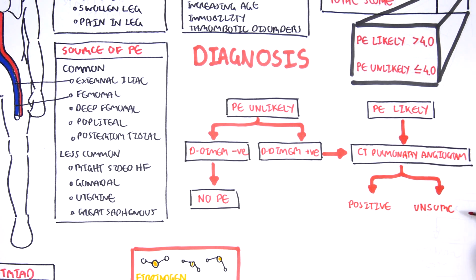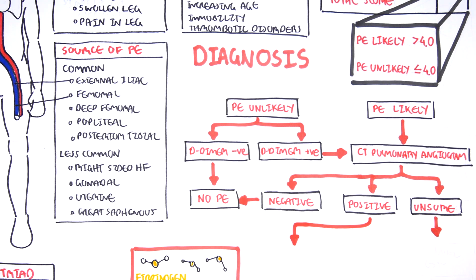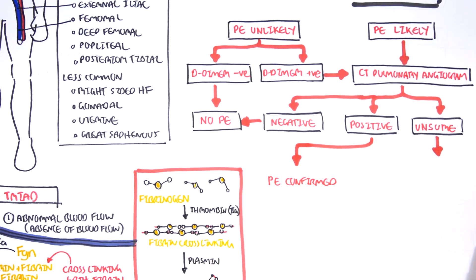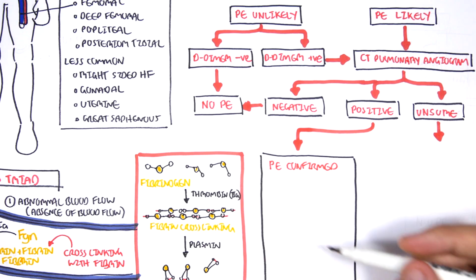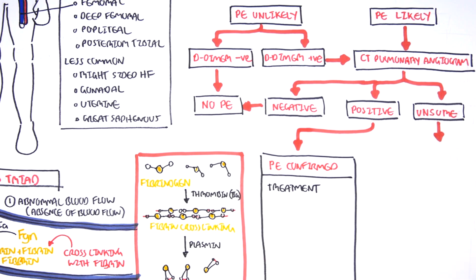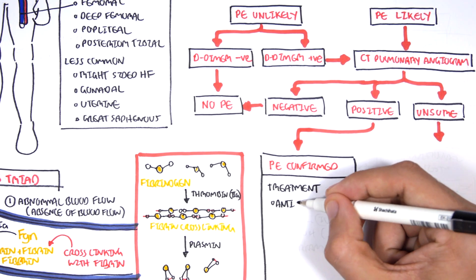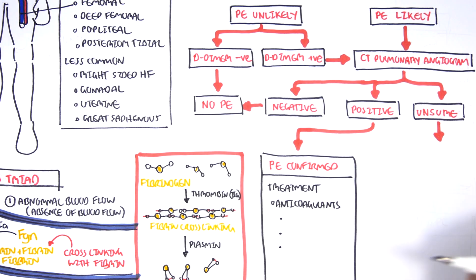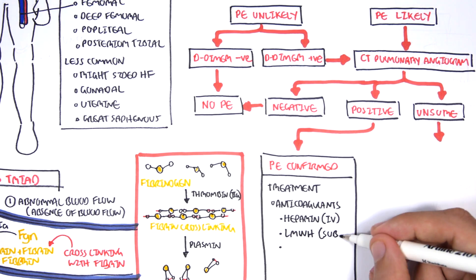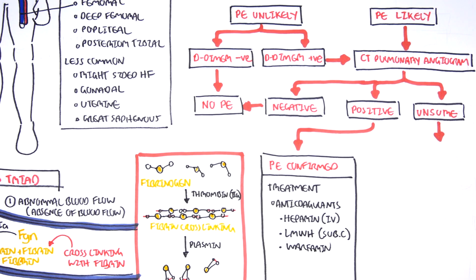After the CT pulmonary angiogram, you can have three outcomes: negative, positive or unsure. If you are negative, the person probably doesn't have pulmonary embolism so you don't need to treat it. If it's positive, pulmonary embolism is confirmed and so you begin treatment. Treatment can be divided into three things: heparin IV, low molecular weight heparin which is subcutaneous administration and warfarin, and we will look into this in more detail.